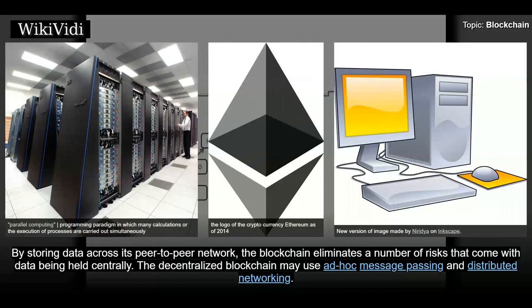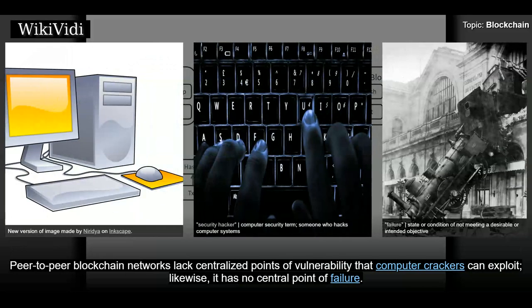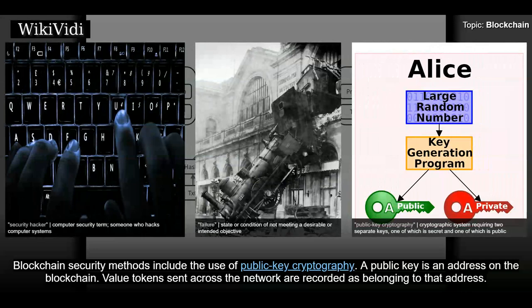By storing data across its peer-to-peer network, the blockchain eliminates a number of risks that come with data being held centrally. The decentralized blockchain may use ad-hoc message passing and distributed networking. Peer-to-peer blockchain networks lack centralized points of vulnerability that computer crackers can exploit. Likewise, there is no central point of failure. Blockchain security methods include the use of public key cryptography.